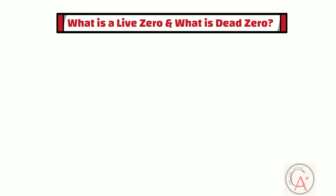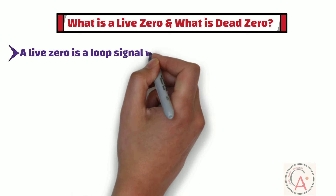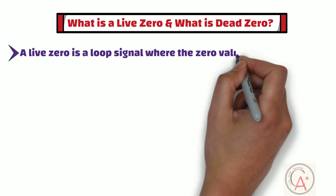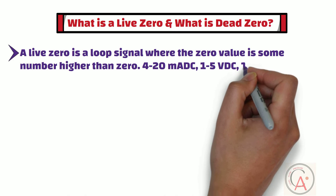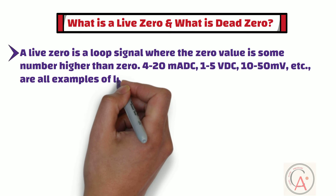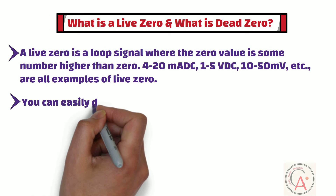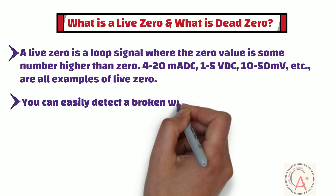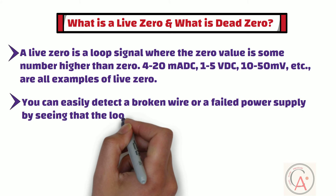A live zero is a loop signal where the zero value is some number higher than zero. 4-20mA DC, 1-5V DC, and 10-50mV DC are all examples of live zero. The significant advantage of a live zero is that you can easily detect a broken wire or a failed power supply by seeing that the loop reading is zero.